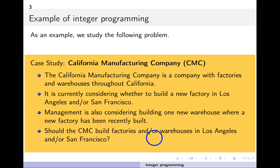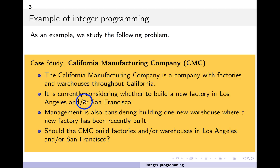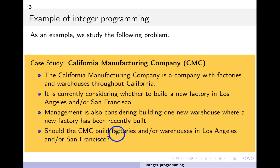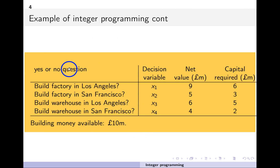The example is a specific problem with a California manufacturing company. This company has factories and warehouses throughout California, and it's trying to decide whether to build a new factory in Los Angeles, or in San Francisco, or perhaps even in both. As well as building a new factory, management is also considering building one new warehouse, and they're only going to put a warehouse where the new factory has been built. The question is: should the company build factories, where should they build them, and where should they build the single warehouse? This is obviously a yes/no question — the decision variables are going to be either one or zero.